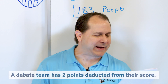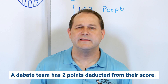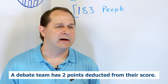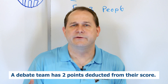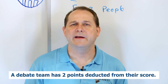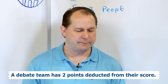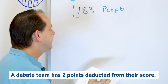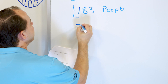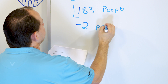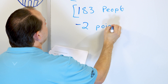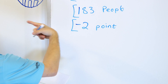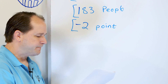Next problem: a debate team has two points deducted from their score. Maybe they had some kind of conflict or foul and they got docked by two points. The points don't go up, so it can't be positive — we're going to call it negative two points. When things go down in general, we call it negative because it goes the other direction, toward the left.